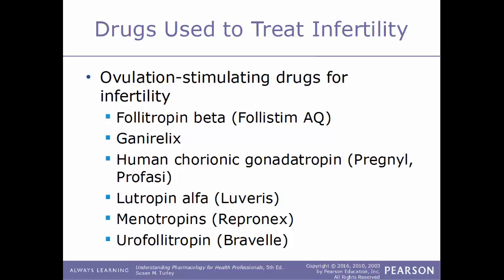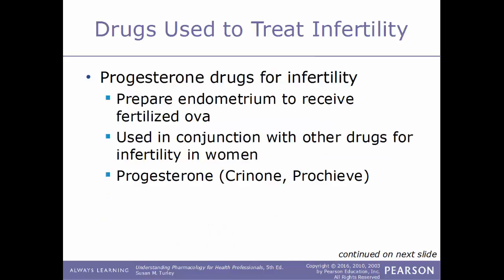Progesterone drugs are also used to treat infertility because they help prepare the endometrium to receive a fertilized ovum. These are used in conjunction with other drugs for infertility in women. Progesterone is sold under the trade names Crinone and Prochieve.